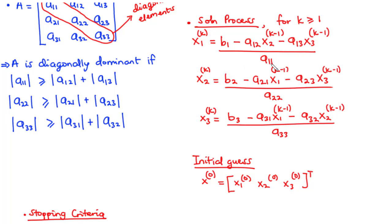We have two sets of x values. On the right-hand side we have xi(k-1) values, and on the left-hand side we have xi(k) values. The xi(k-1) values are the values we substitute into these three equations to obtain the new set of xi(k) values. So on the right-hand side we put in xi(k-1), the previous or initial value, to obtain xi(k), which is the new value.